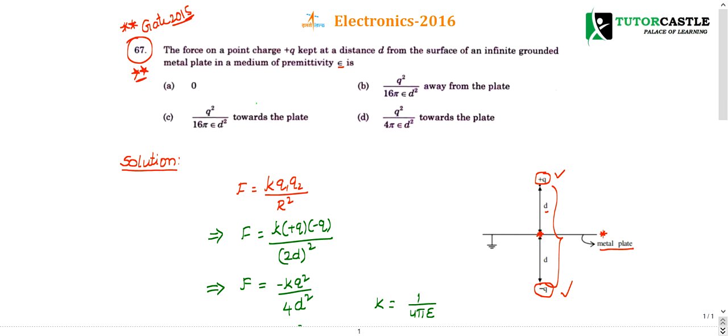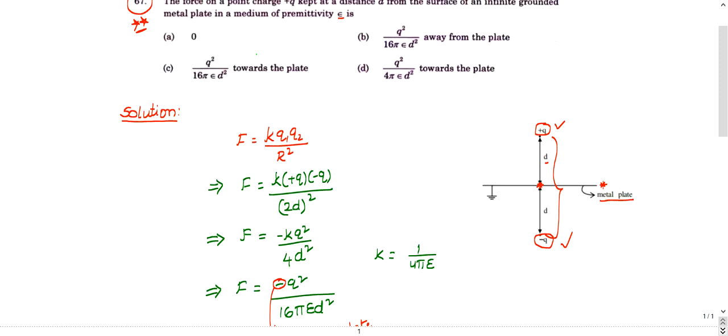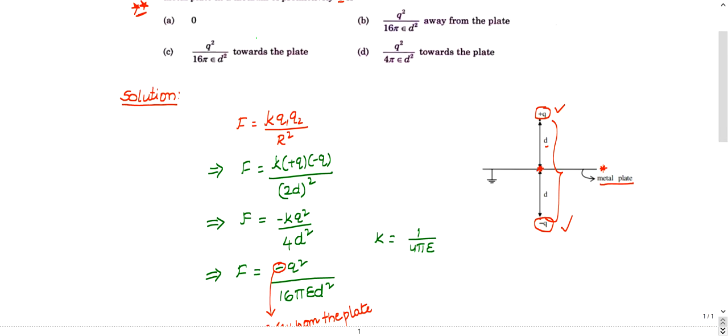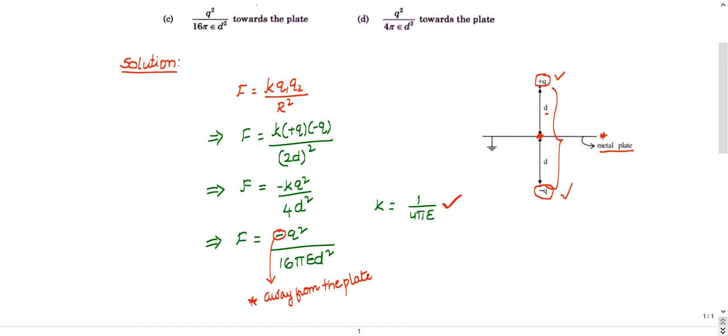k as it is, q1 is +q, q2 is -q, r is 2d whole square. So k into -q square divided by 4d square. k is 1 by 4π epsilon r. Just substitute that, then you get -q square by 16π epsilon d square.